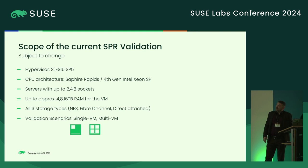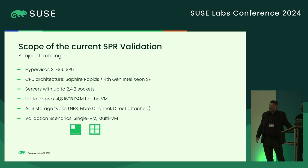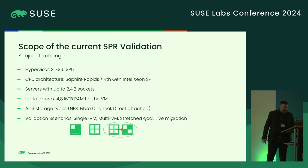In writing, this means we are validating SLES 15 SP5 on the Sapphire Rapids CPU architecture for servers with up to two, four, and eight sockets — four, eight, and sixteen terabytes of RAM inside the VM. We are aiming at all three storage types: NFS storage, fibre channel, and direct attached. We are trying to do that for single and multi-VM scenarios. The stretch goal would be live migration — that's a personal goal for me — but we'll see.